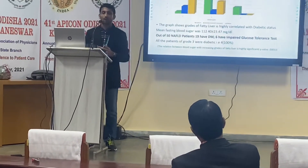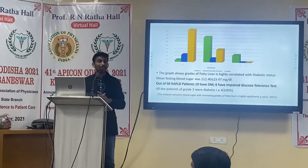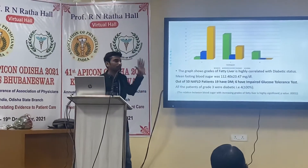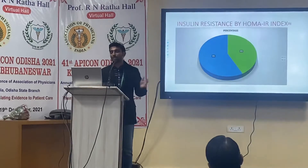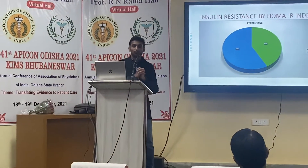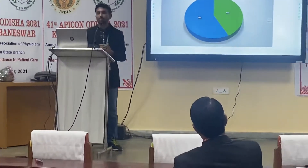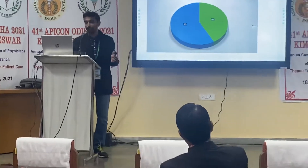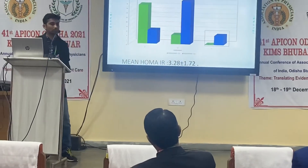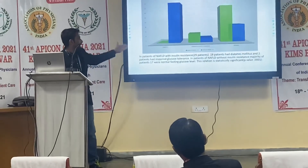The mean fasting blood sugar was around 112. Out of the 50 patients, 19 were having diabetes mellitus and 6 were having impaired glucose tolerance. So most patients had some form of impairment in glucose status. HOMA insulin resistance was calculated and found to be 3.28, which is significantly very high, and with such insulin resistance most patients are evidently diabetic.